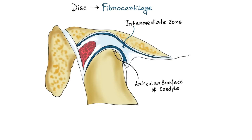The disc maintains its morphology unless destructive forces or structural changes occur in the joint. If these changes occur, the morphology of the disc can be irreversibly altered and produce biomechanical changes during function.